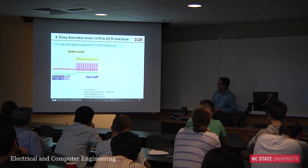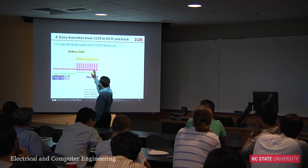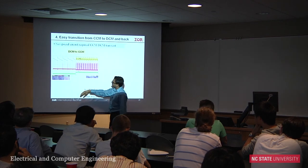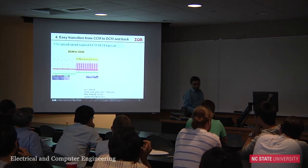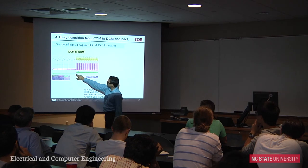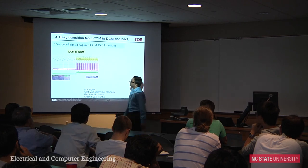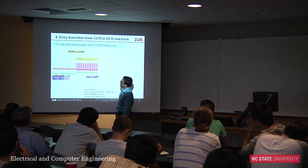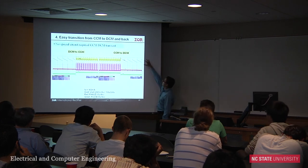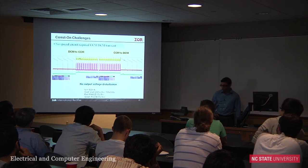Here is a scope capture showing DCM and CCM operation. At 100 milliamp load, when the CCM-to-DCM switch is toggled, the transition is smooth — V_out doesn't budge, ripple remains the same. Going from CCM to DCM looks identical in the output. Doing the same in voltage mode takes a lot more work with the error amplifier, and the design gets even more complex.